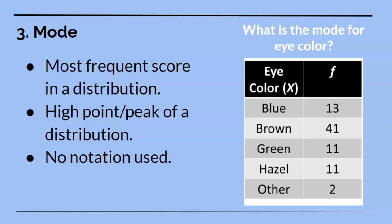Remember that mode is the most frequent score in the data set. So you will look at the highest F, or the highest frequency, and then scroll over to the corresponding X score.